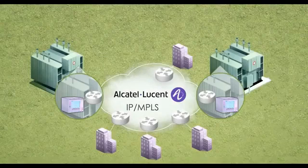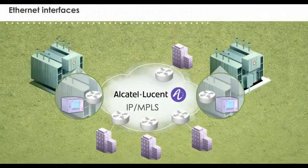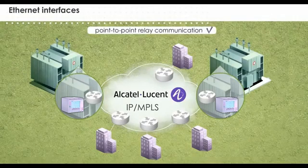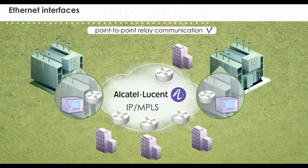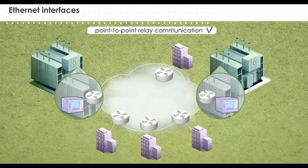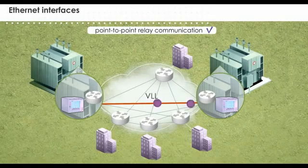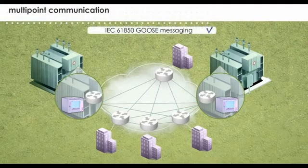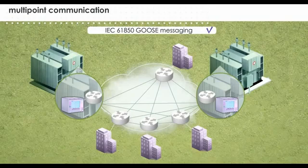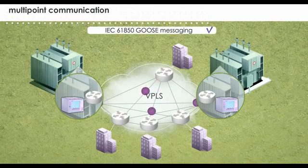New generation relays utilize Ethernet interfaces. Point-to-point relay communication can be supported with an Alcatel-Lucent IP MPLS network using Ethernet Virtual Leased Line (VLL) service. Multipoint communications such as IEC 61850 GOOSE messaging can be supported using Virtual Private LAN Service (VPLS).